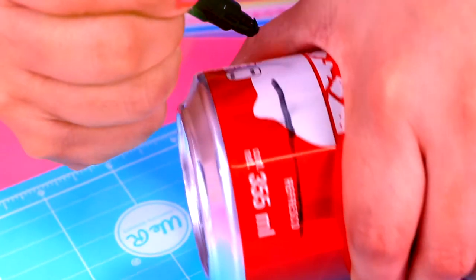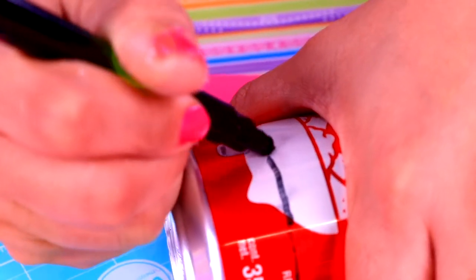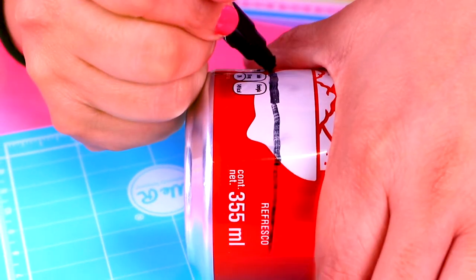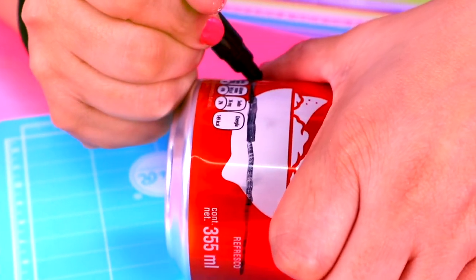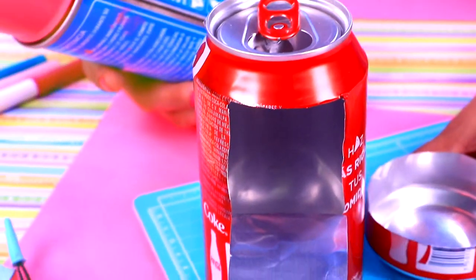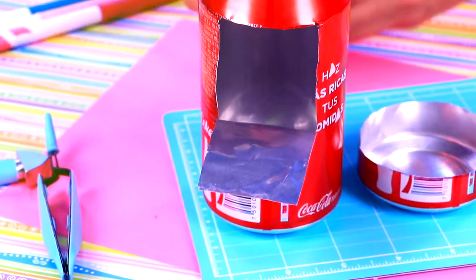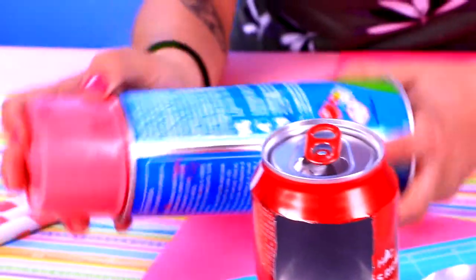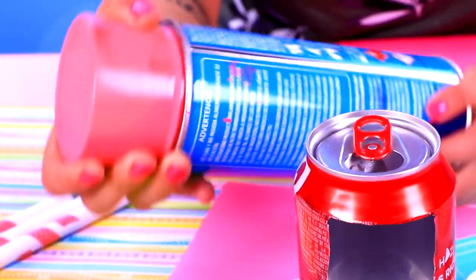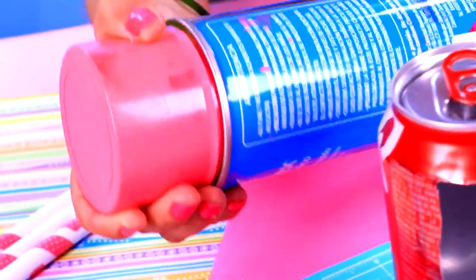With another soda can, we are going to mark a line all around the bottom part of it. And then, we are going to cut it. Be very careful! So, now, we have these two pieces. The big one is where the popcorn is going to be cooked. And the small part is going to be the source of heat. Oh! But first, don't forget to spray paint them!